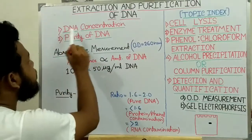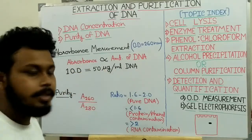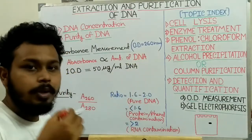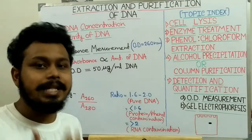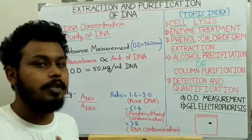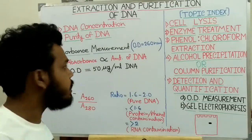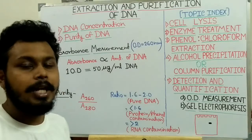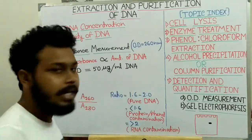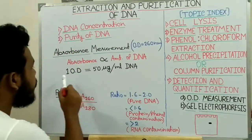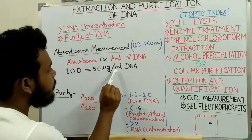First, to measure the DNA concentration and to check the purity of the DNA, we have to use absorbance measurement. That is OD at 260 nanometer, and we also take absorbance at 280 nanometer. DNA shows highest UV radiation absorbance at 260 nanometer, and higher absorbance is proportional to the amount of DNA present. A standardized value is: 1 OD is equal to 50 microgram per ml DNA.